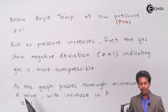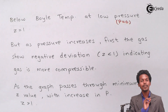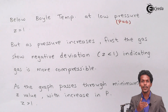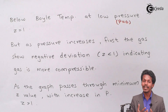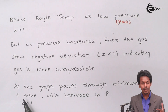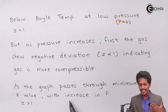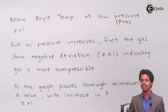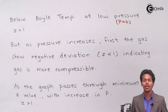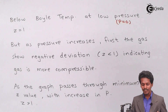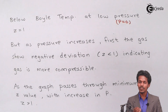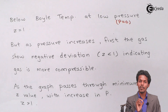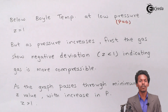As the graph passes through a minimum Z value — the point at which it behaves like an ideal gas — below this it can be compressed, and above it will be less compressible. When it crosses Z equals to 1 and pressure continues to increase, the value of Z also increases. So this is the deviation we observe for real gases. If Z is more than 1, the gas will be less compressible. The Boyle temperature is basically the temperature at which the gas behaves ideally, where Z equals to 1.